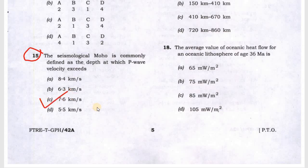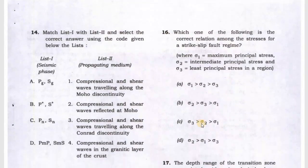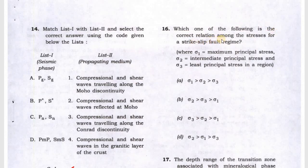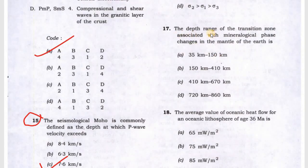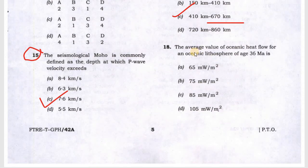Question 15: in seismology the Moho is commonly defined at the depth where P wave velocity exceeds 7.6 km/s. C will be the correct one. Next, which one of the following is the correct relationship among the stress for a strike slip fault? This is option A. Next, which depth range of the transition zone is associated with mineralogy phase change in the mantle of the earth? This is 410 to 670 km. Next, the average value of oceanic heat flow of an oceanic lithosphere age of 36 million years. I have doubted this question so I will not answer it.